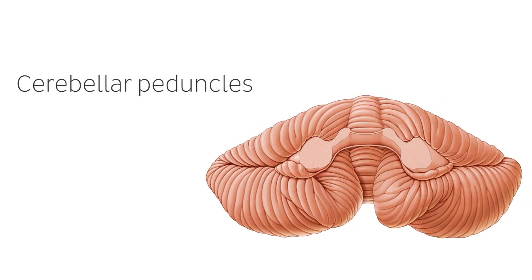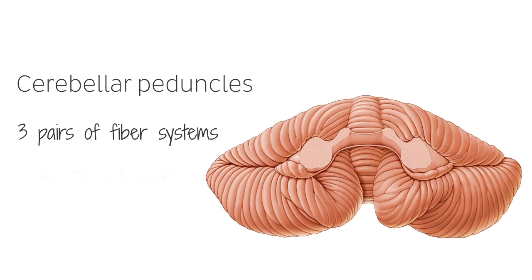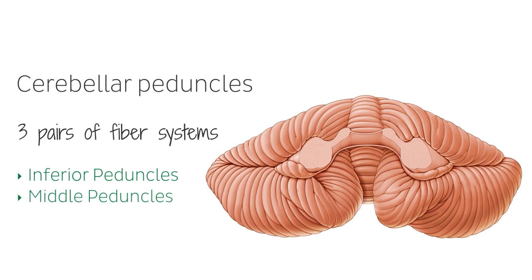The cerebellum is a highly interconnected structure of the nervous system and has numerous connections with other parts of the nervous system. All these afferent and efferent connections of the cerebellum come through three pairs of fiber systems which connect the cerebellum with the CNS, the central nervous system, and they are called peduncles. There are three peduncles of the cerebellum that you need to know: the inferior peduncle, the middle peduncle, and finally the superior one. In the following slides we're going to be looking at these three pairs of structures.